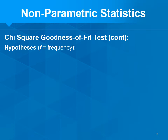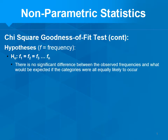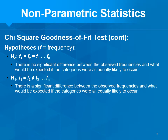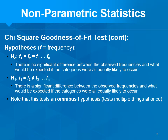Your hypotheses, where F equals frequency: the null is that the frequency of level one equals level two equals level three, etc. — there is no significant difference between the observed frequencies and what would be expected if the categories were all equally likely to occur. The alternative is that they're not all equal — at least one differs. This is an omnibus test: it compares all categories to each other at the same time, so you'll need a post-hoc test when you reject the null.